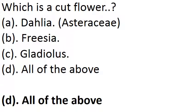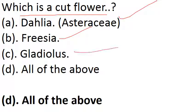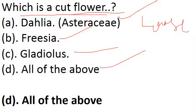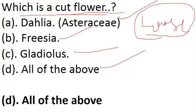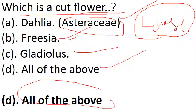Next question: What is a cut flower? Options are Dahlia, Freesia, Gladiolus, or all of the above. You should know the difference between cut flower and loose flower. There is a huge list of cut flowers, so instead remember the list of loose flowers provided in this slide. We will discuss every option. Dahlia comes under Asteraceae family. The answer here is all of the above — these all come under cut flower.